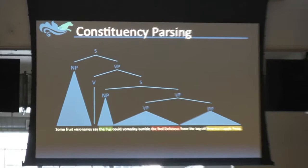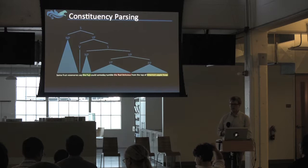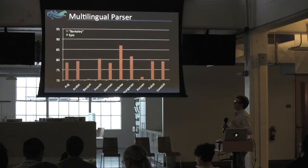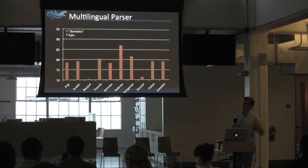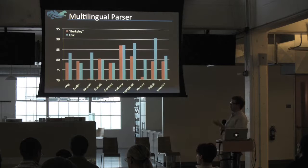We also have constituency parsers. Epic has state-of-the-art algorithms and models for eight other languages: Basque, French, German, Hebrew, Hungarian, Korean, Polish, and Swedish. Our system is consistently better than what was previously the state-of-the-art system across all these different languages. We're also nearly as good on English. We're a little bit worse on French, German, and Arabic, but for languages like Korean and Polish we're way better.